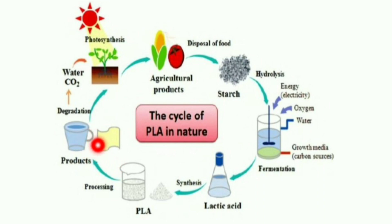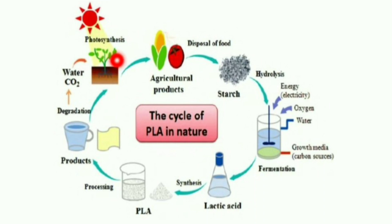After synthesis, PLA is formed into specific industrial products. For example, polylactic acid is widely used in making cutlery. When the cutlery is used and then broken down — since biodegradability is a basic property of PLA — it produces plant matter. These plants then produce agricultural products, which can be converted back into starch, and from starch we can again carry out fermentation, continuing the entire cycle.